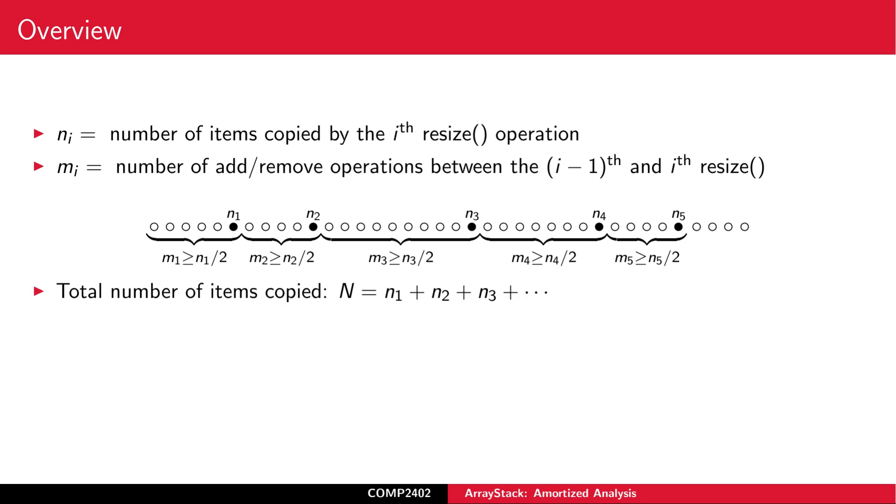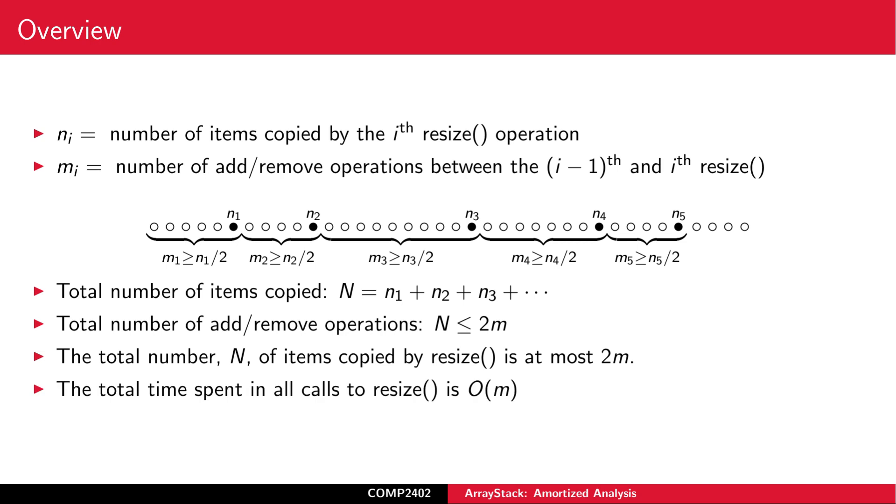Let's summarize. The total number of items copied by resize is the sum of the N sub I's. The total number of add and remove operations is at least the sum of the M sub I's. But each M sub I is at least half of N sub I. This means that the total number of add and remove operations is at least half the total number of items copied by resize. Another way of saying this is that the total number of items copied is at most twice the total number of add and remove operations. Since all the work done by resize is bounded by the number of items copied, we conclude that the total time spent in calls to resize is O of M.